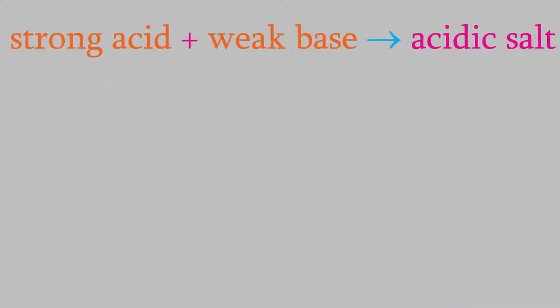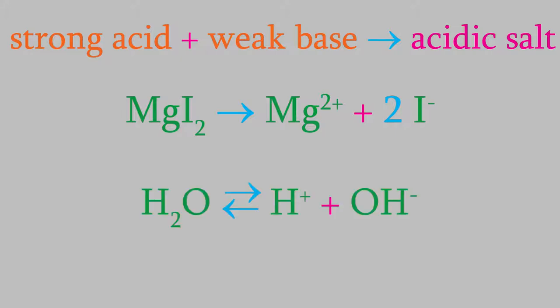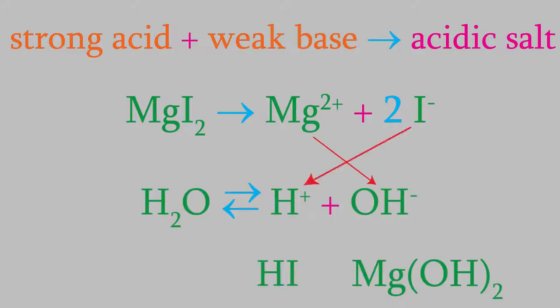If we get a strong acid and a weak base, the solution will be acidic. For example, magnesium iodide produces magnesium ions and iodide ions. That means we'll get magnesium hydroxide and hydroiodic acid. Those are a weak base and a strong acid, so the salt solution is acidic overall.